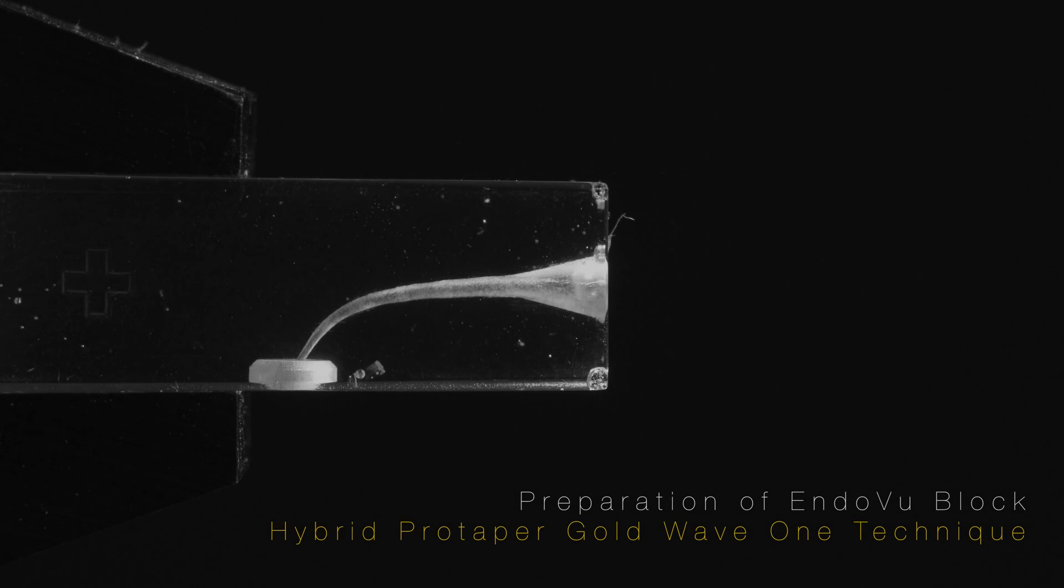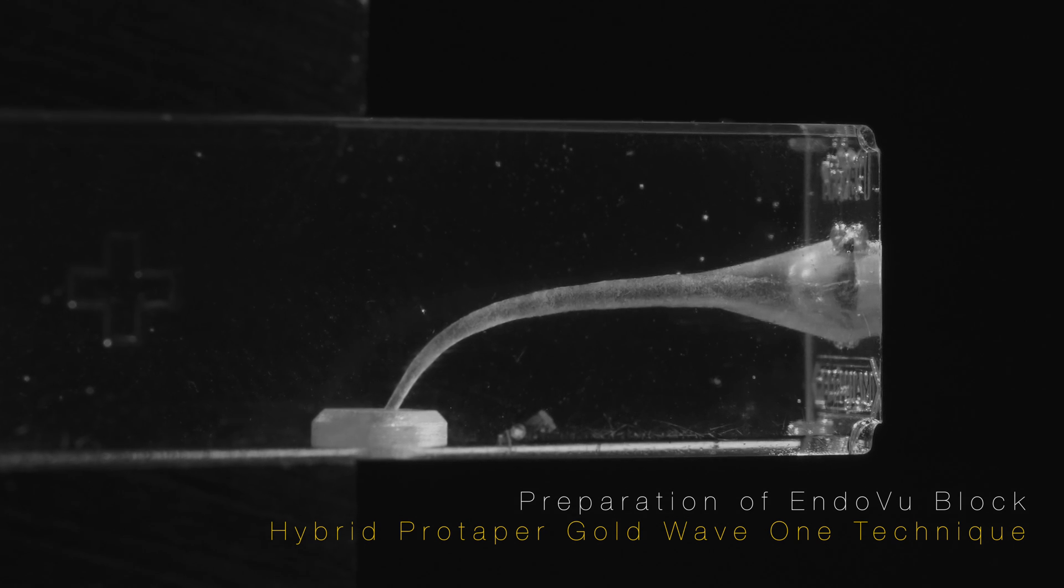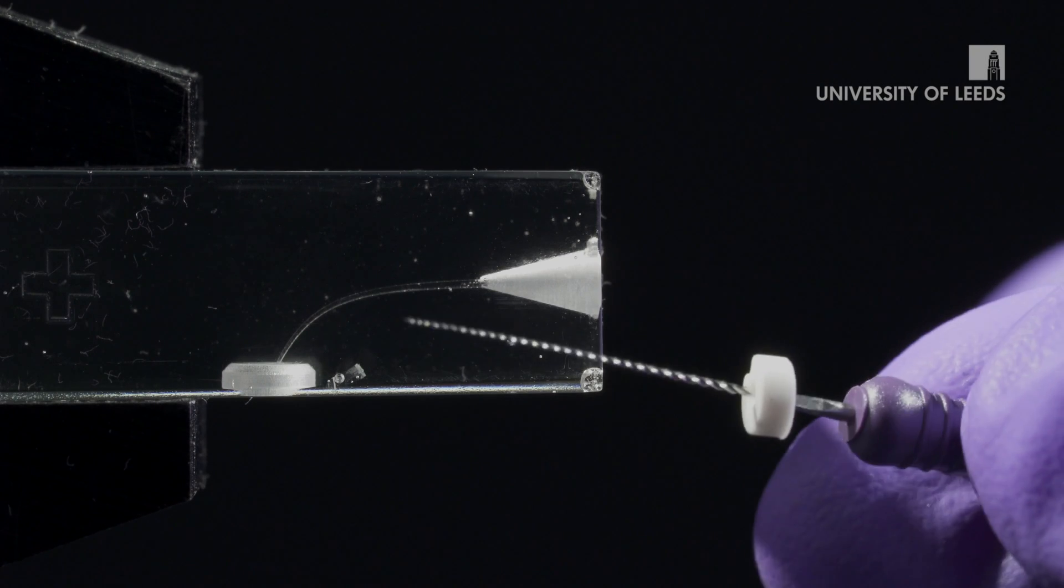In this video we will prepare a curved endo vu block using the WaveOne Gold primary file, having first carried out the coronal flare with the rotary ProTaper Next X1 file. The first step is to develop a glide path using hand stainless steel instrumentation.